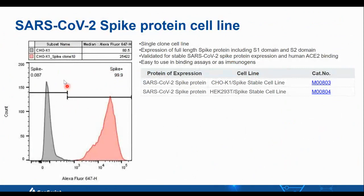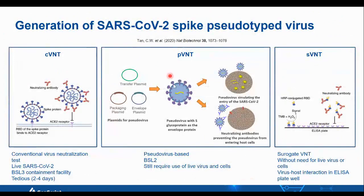In addition to the ACE2 cell line, we also have the spike protein cell line expressing the full-length spike protein including the S1 and S2 domains. These are validated for stable SARS-CoV-2 spike protein expression and human ACE2 binding, and are available in either the CHO-K1 or HEK system. Tan and Law in 2020 used such spike protein cell lines to generate a pseudovirus-based virus neutralization test (PVNT).